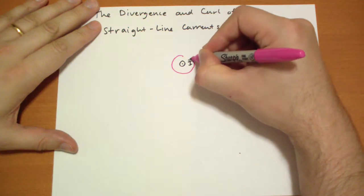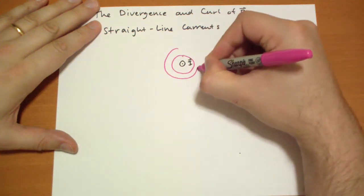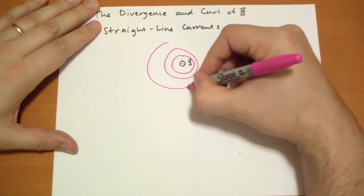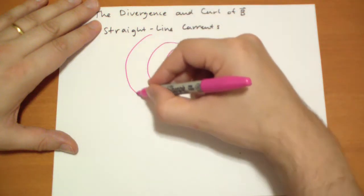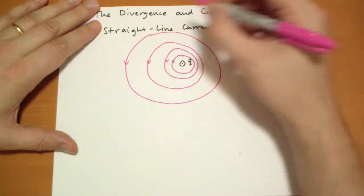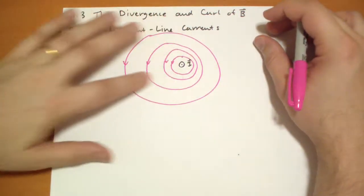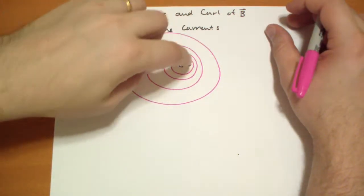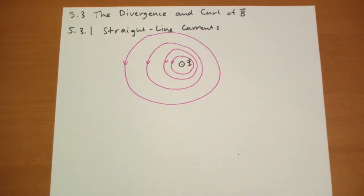As you get further out it's going to get weaker. It's a perfect circle centered on the current, which I didn't draw of course, but just imagine these circles are centered on that. That gives you a good visual of the B vector.